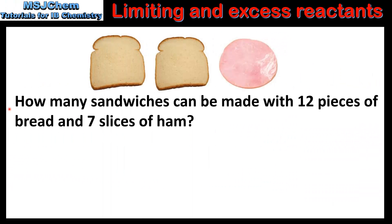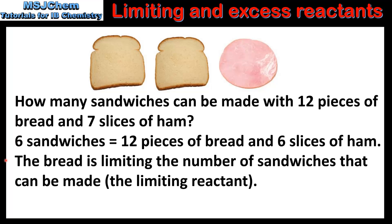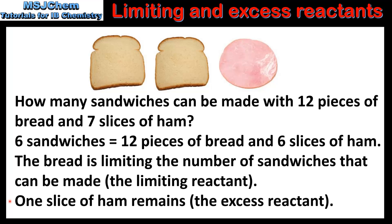So let's start with a question: how many sandwiches can be made with 12 pieces of bread and 7 slices of ham? The answer is 6 sandwiches, which would require 12 pieces of bread and 6 slices of ham. In this example the bread is limiting the number of sandwiches that can be made, and one slice of ham remains.